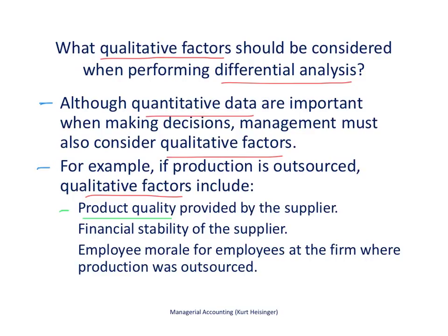The second example is the financial stability of our supplier. Are they financially stable? Are they going to be around for a while? If we're going to outsource to a supplier and they make a good quality product, but there's a chance they're going to go away in six months, that can create real problems for us if we no longer produce our own product. So we want to take a look at the financial stability of any potential supplier we might outsource to.